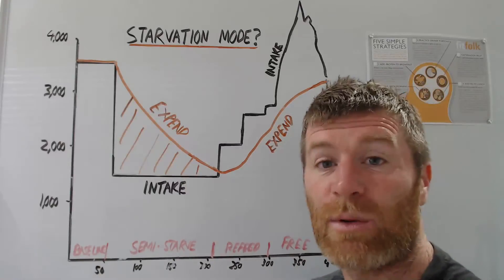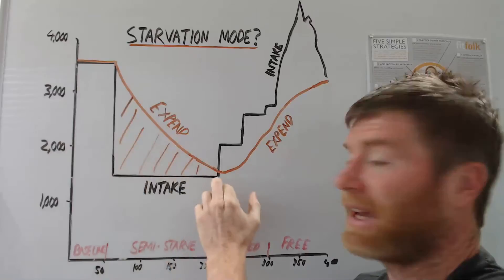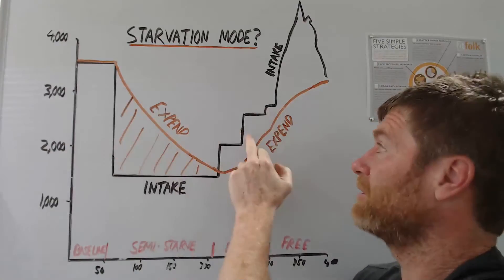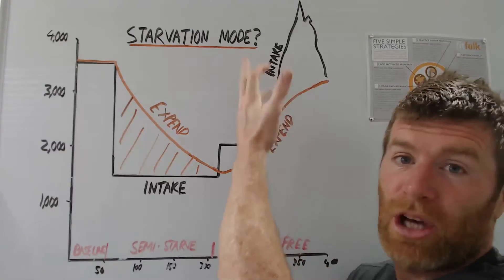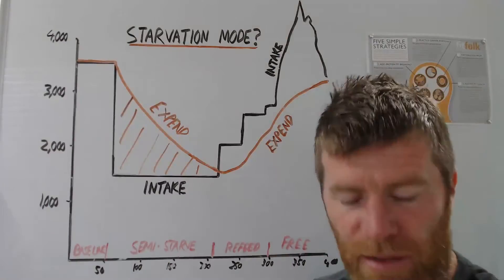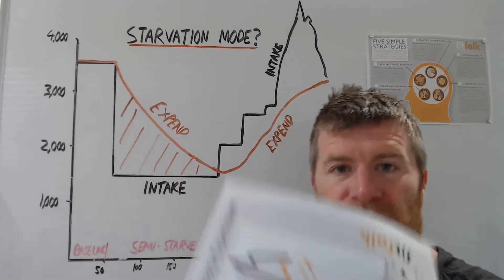The really interesting thing was what happened after this phase is when they refed them. So this is them gradually adding back the calories. And then at a certain point they just let them go ad libitum. So eat as much as they want, and they started eating like 6,000 calories because they were so hungry. So I'll show you this phase here.